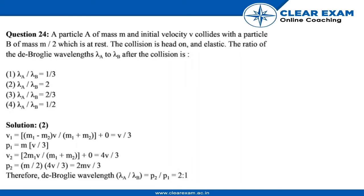Second option is 2. Third option is 2 by 3, and fourth option is 1 by 2. So the correct option is lambda A by lambda B is equal to 2, that is second option.